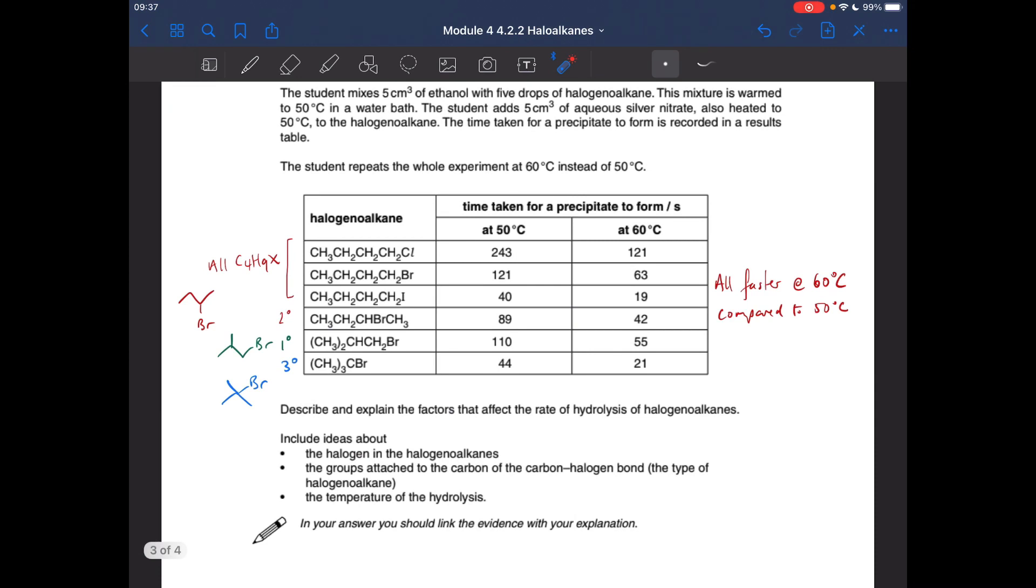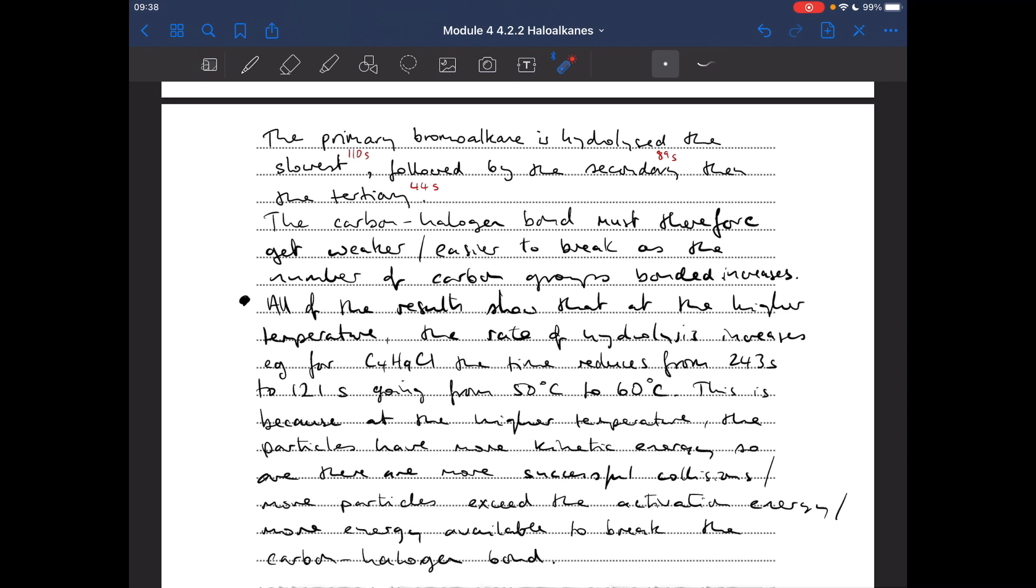And then the final thing is the effect of the temperature on the rate of hydrolysis. So this is just a classic rate of reaction type of question. You can see that all the times at 50 degrees C are slower than the corresponding 60 degree time. So all I'm going to do is just pick one of these. I think I've gone for that one and just talk about that. So I'm using data from the table.